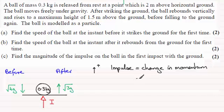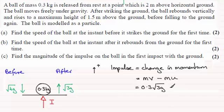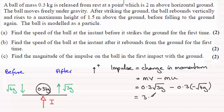Remember momentum is mass times velocity, so impulse equals m times v minus m times u. For this question the mass is 0.3, the final velocity is root 3g upwards — that's positive — and then minus 0.3 times the initial velocity, which was root 4g but downwards, so that's negative root 4g. Working this out on your calculator you should get 3.504, measured in newton seconds. To three significant figures that's 3.50 newton seconds.